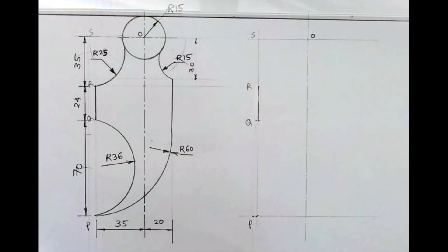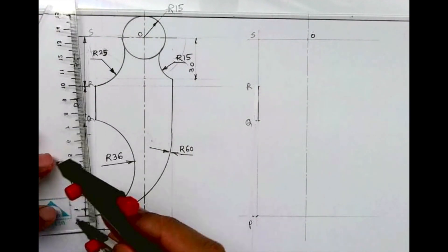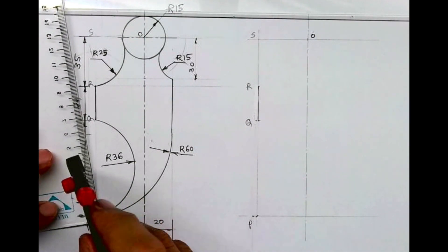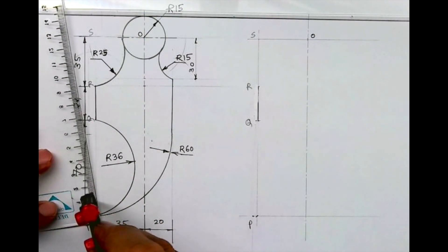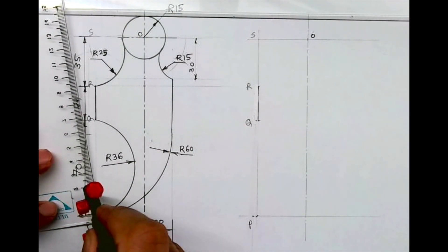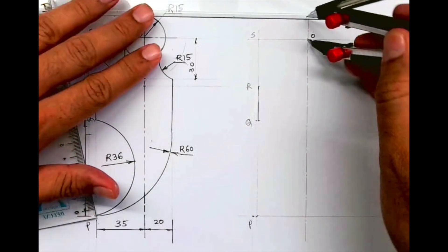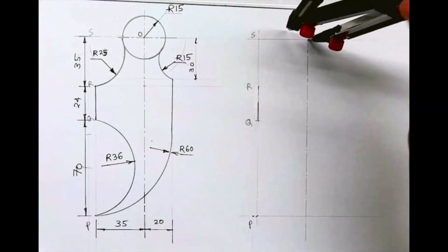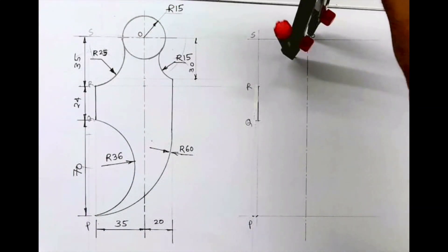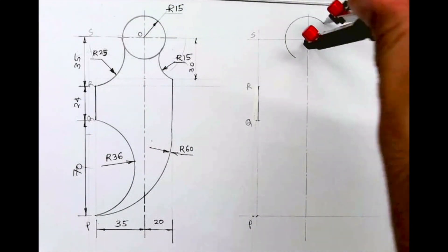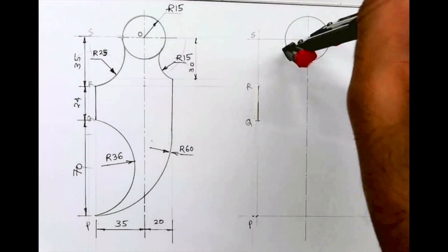Now I need to draw these radii. First I will take radius 15 and draw from O, so we can draw radius 15 from center O.